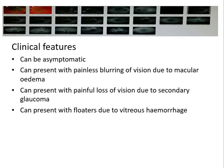Patients with vein occlusion can be totally asymptomatic, or present with gradual painless blurring of vision due to macular edema. In severe cases, there may be sudden loss of vision. Patients can also present with painful loss of vision if they develop secondary glaucoma. Some patients present with floaters or black shadow-like or spider-like structures in their visual field, which can be due to vitreous hemorrhage from neovascularization developing as a complication.